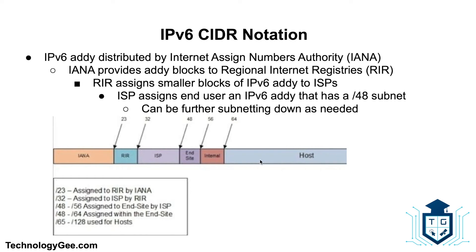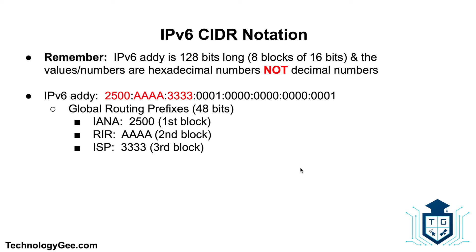An IPv6 address is 128 bits long — eight blocks of 16 bits each, since 16 times 8 equals 128. Importantly, the values are hexadecimal numbers, not decimal numbers. This distinction matters when converting these values back to their binary or decimal equivalents.